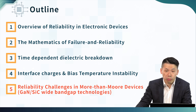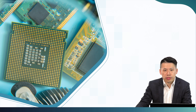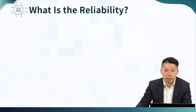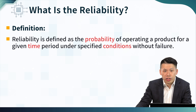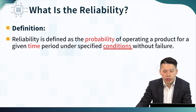As an example, these topics will be introduced in this lecture. So first, let's start from the basic overview of reliability in electronic devices. Before we move on to further analyze the reliability and degradation in the semiconductor device, we need to understand what reliability is. Looking at the dictionary, the basic definition of reliability is the probability of operating a product for a given time period under specific conditions without failure.